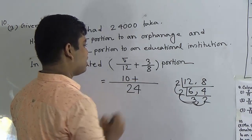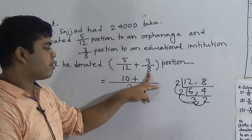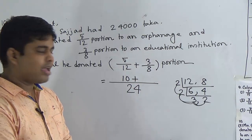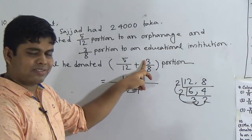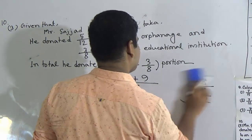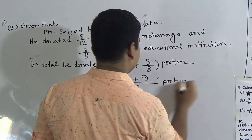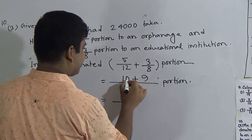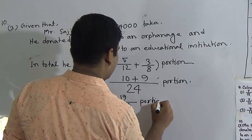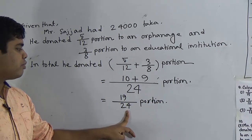So we have 10 plus 9, all over 24. We write 'portion' as the unit. We do the addition: 10 + 9 = 19, so it is 19 by 24 portion. In total, Mr. Sajjad donated 19 by 24 portion of his money.